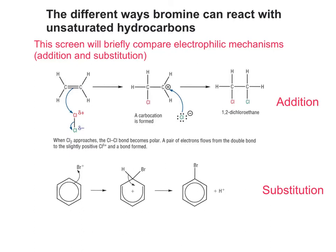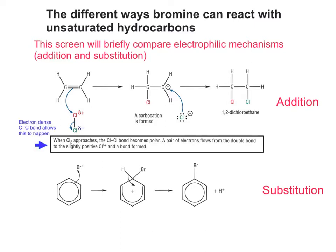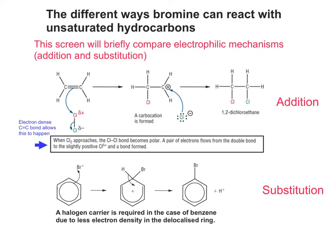Looking at these closely, one happens to have chlorination, the other one bromination. In the case of the addition, the electron-dense carbon-carbon double bond allows this whole thing to take place. As highlighted on the diagram, when Cl2 approaches, the Cl-Cl bond becomes polar, just like we talked about on the previous screen. In the case of benzene, as you know already, a halogen carrier is required to create the electrophile, the Br+.